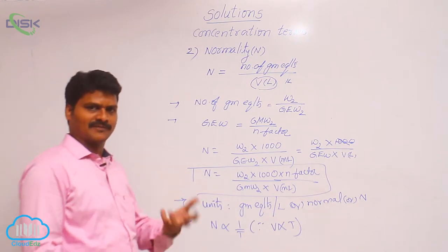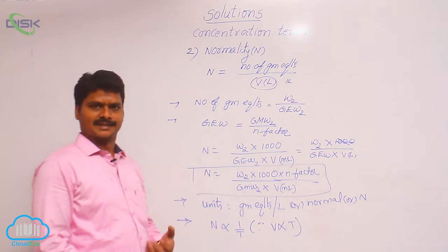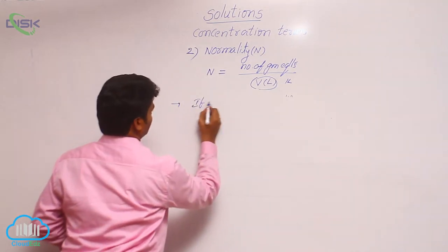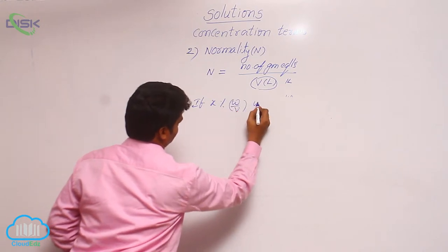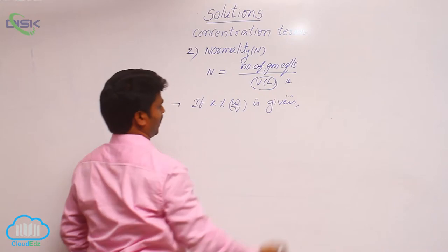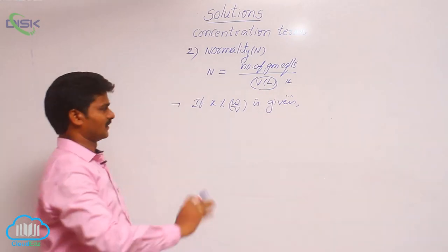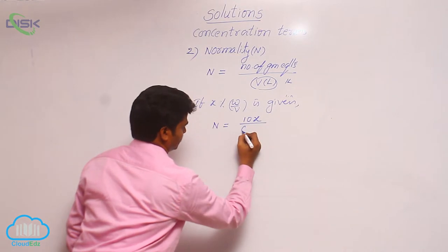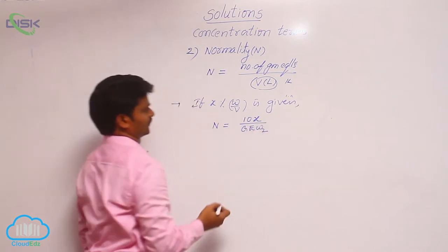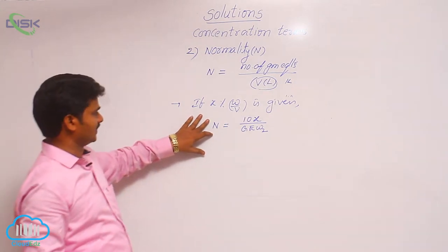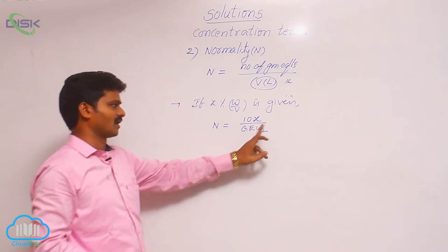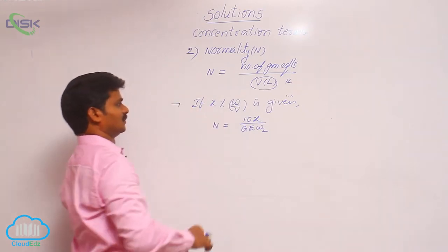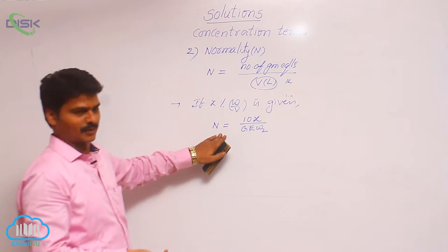Now let us discuss different formulas for normality. When X percentage w/v is given, the formula for normality is: normality = 10X divided by gram equivalent weight of solute. Compare this to the molarity formula where it is 10X divided by gram molecular weight — here we use gram equivalent weight instead.